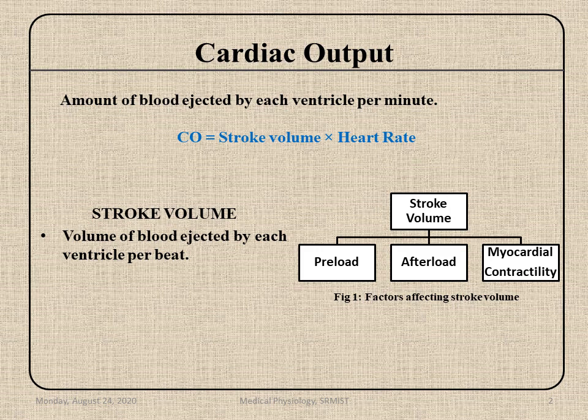Now we will see the definition for stroke volume — what is stroke volume and what are the factors affecting it. Volume of blood ejected by each ventricle per beat is called stroke volume. Preload, afterload, and myocardial contractility will be affecting this stroke volume, and hence the cardiac output also will be changed.